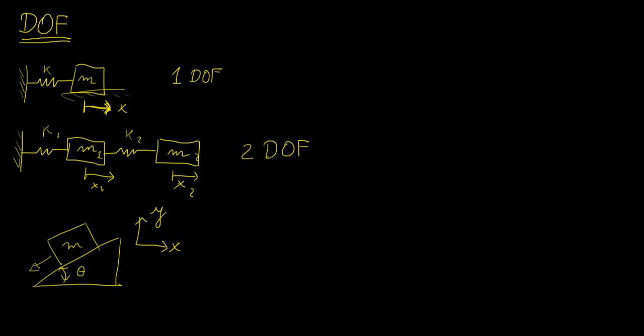So in the example here of this spring mass system, what you have is you have a mass attached to a spring, and now the only way that this actual object can move is either to the right or to the left. So there's one dimension along which it can move, so we say that this system in particular has one degree of freedom.